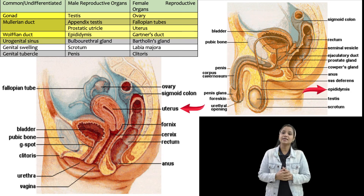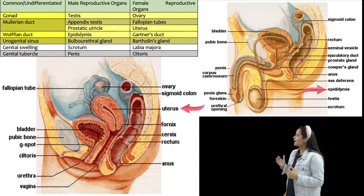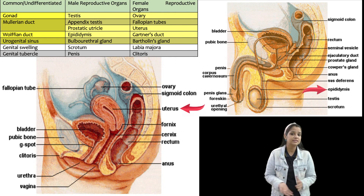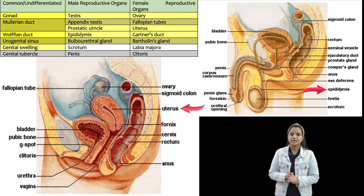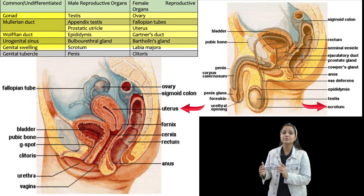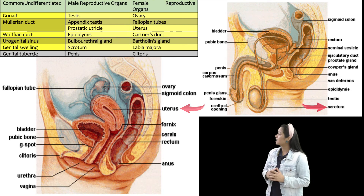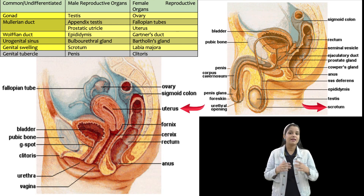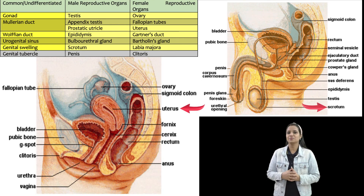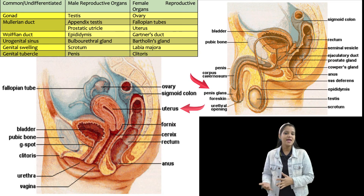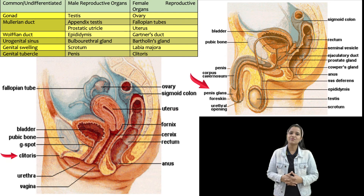The fourth is the urogenital sinus, which is known as the bulbourethral gland in the case of the male, and in the case of the female, that is known as Bartholin's gland. The fifth is the genital swelling, which is known as the scrotum in the case of the male, and in the case of the female, that is the labia majora. The last one is the genital tubercle, which is known as the penis in the male and the clitoris in the female.